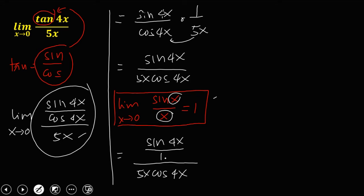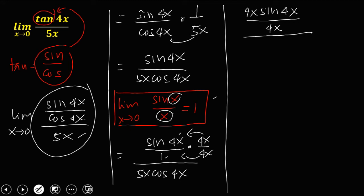So we need to make this denominator equal to this angle by multiplying both sides by 4x. Then simplify, so we have now 4x then sine 4x over 4x. So distribute to both sides, then all over 5x then cosine 4x.